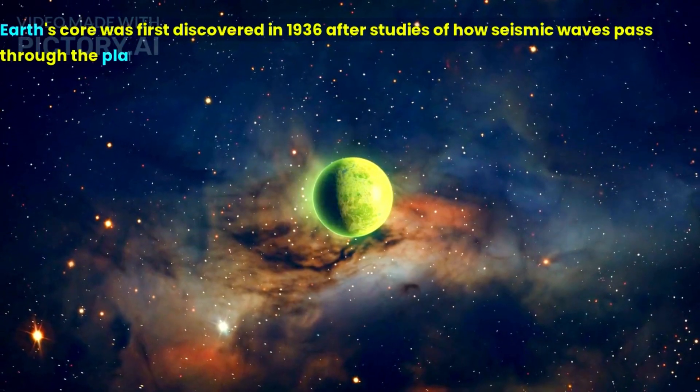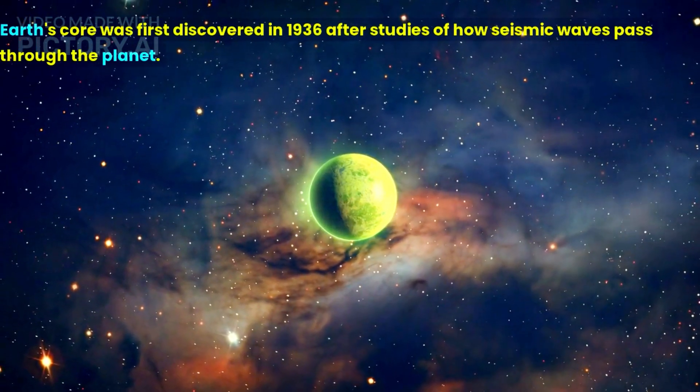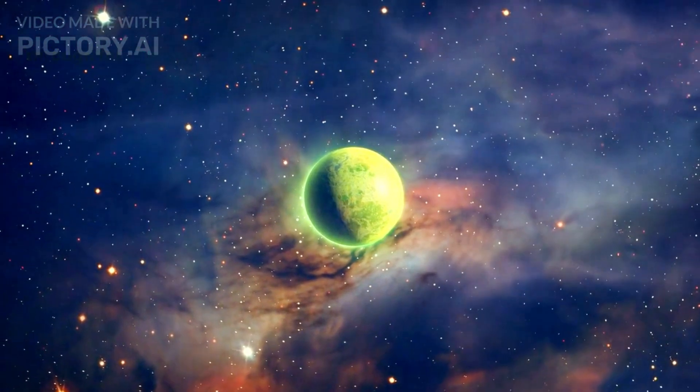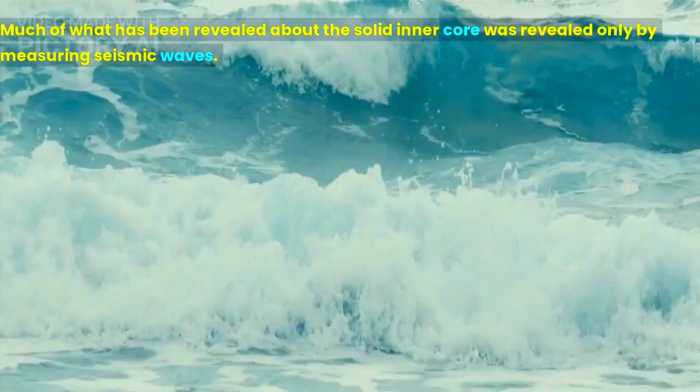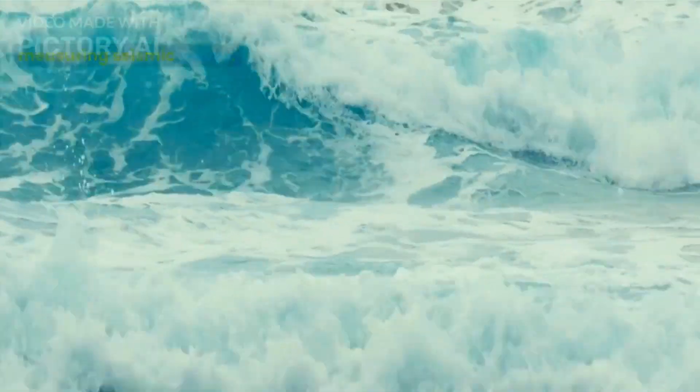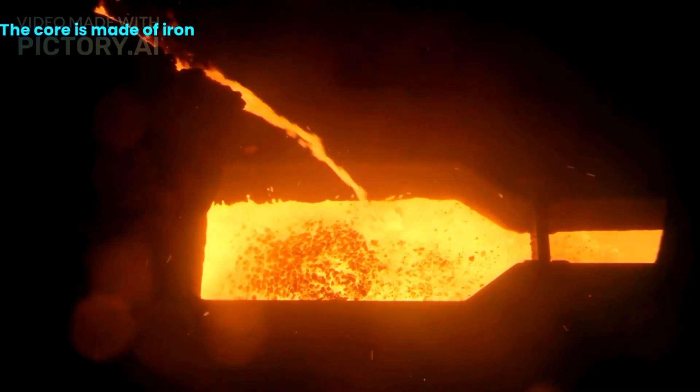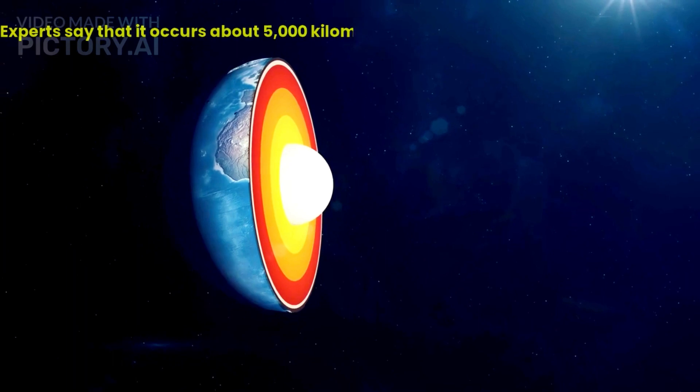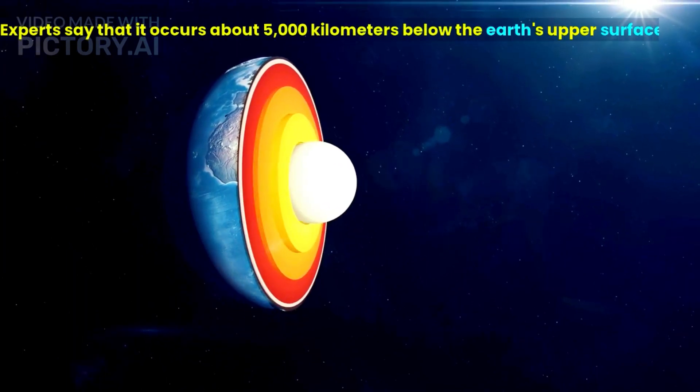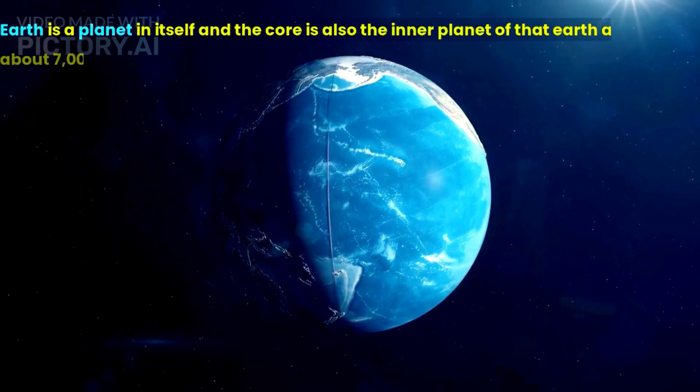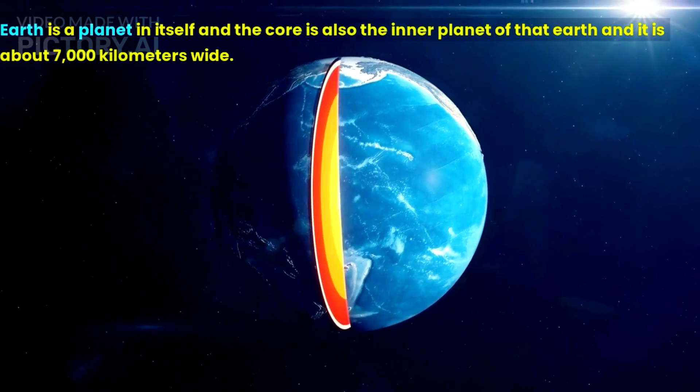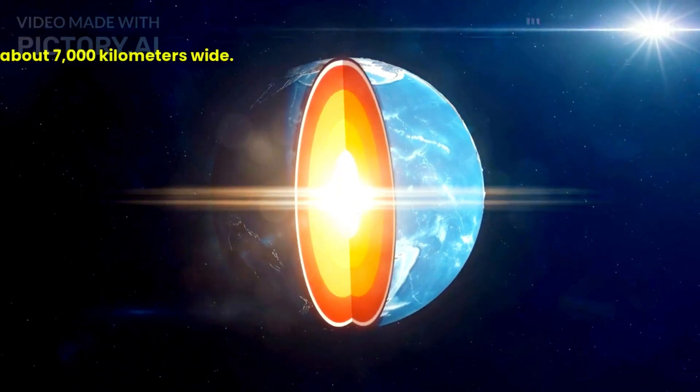Earth's core was first discovered in 1936 after studies of how seismic waves pass through the planet. Much of what has been revealed about the solid inner core was revealed only by measuring seismic waves. Experts say that the core occurs about 5,000 kilometers below the earth's upper surface. Earth is a planet in itself and the core is also the inner planet of that earth and it is about 7,000 kilometers wide.